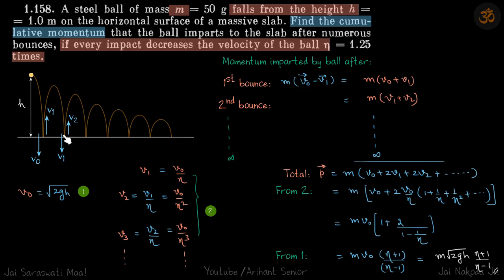Similarly for the second bounce, the change in momentum of the ball is m into v1 plus v2. And change in momentum of the ball is the momentum imparted to the ground and so on.